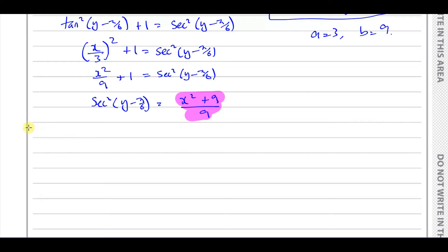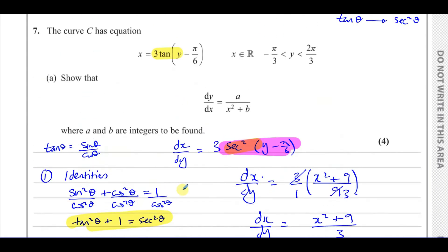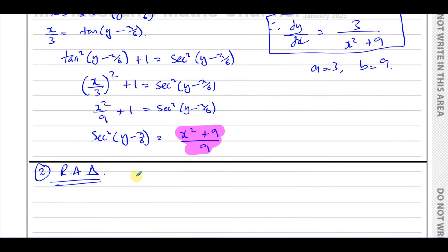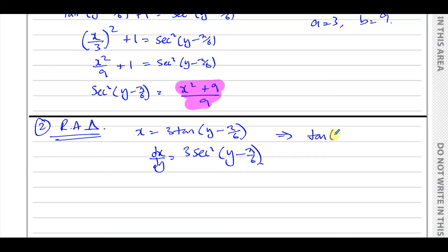Now I'll show the other way — using a right-angle triangle, which I actually prefer, though most students prefer identities. We start the same way: x = 3 tan(y − π/6), so dx/dy = 3 sec²(y − π/6). I want to replace sec² in terms of x, so I note that tan(y − π/6) = x/3, and now I'll draw a right-angle triangle.